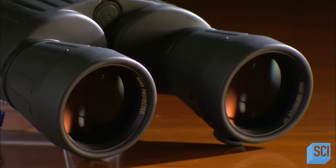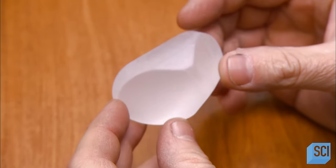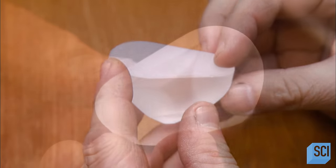The objectives are curved, causing the image to appear upside down. To turn it right side up, each binocular half needs a glass prism.